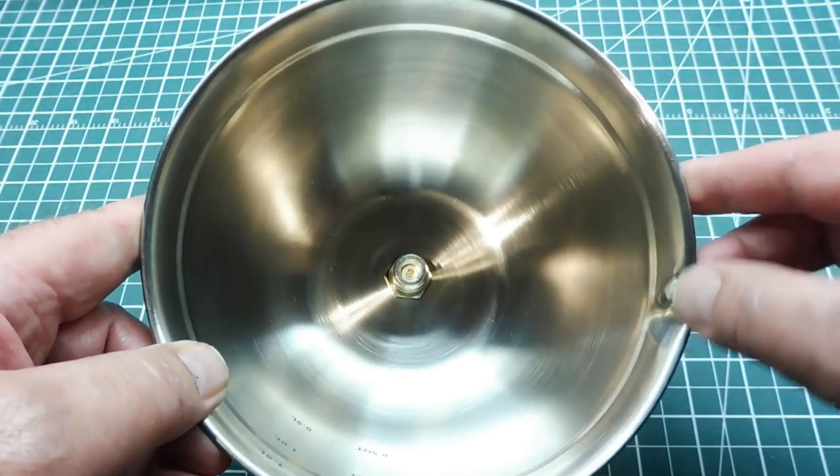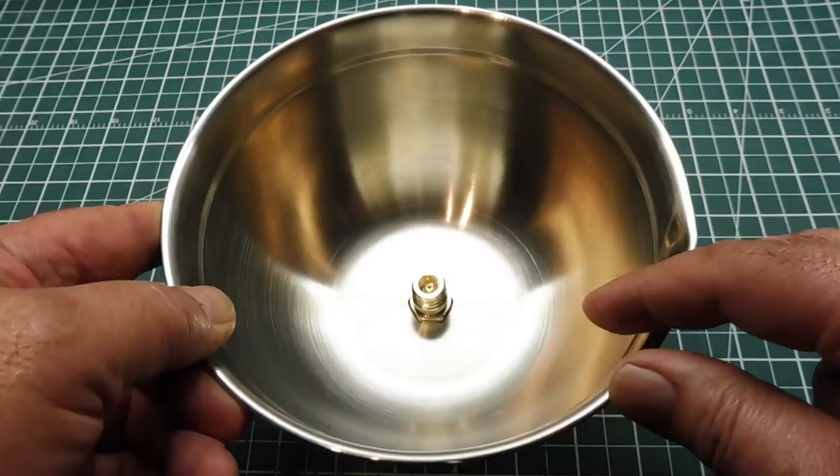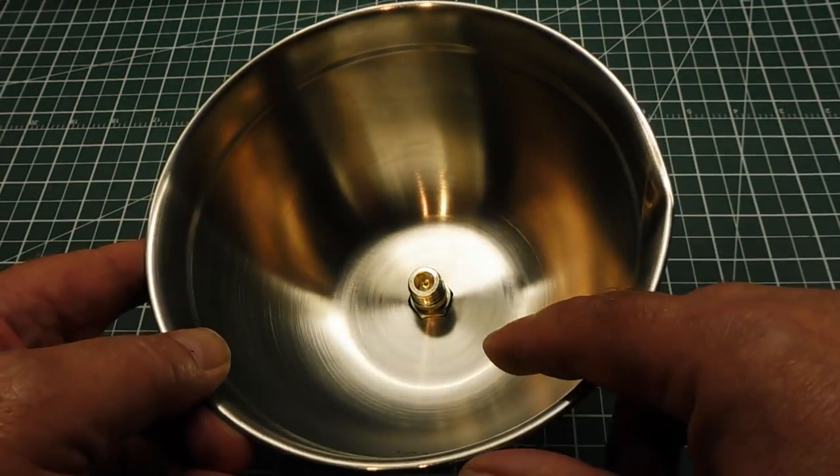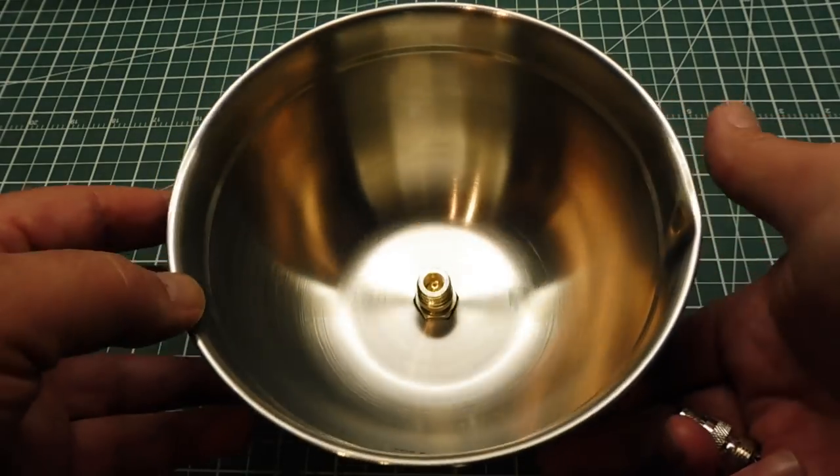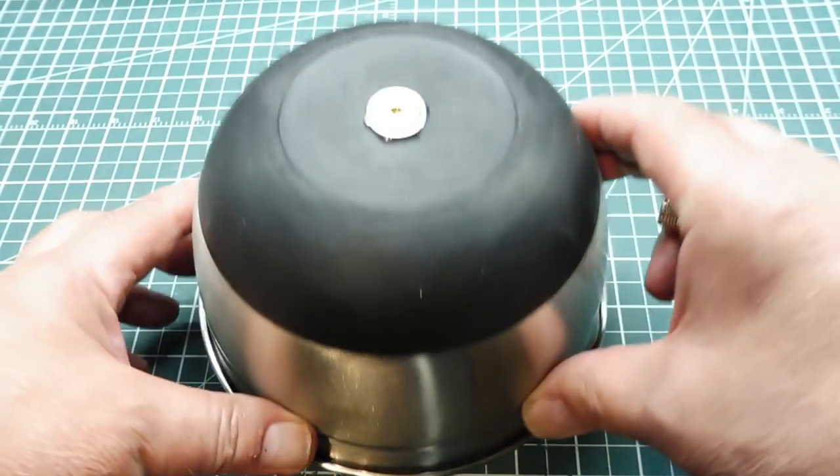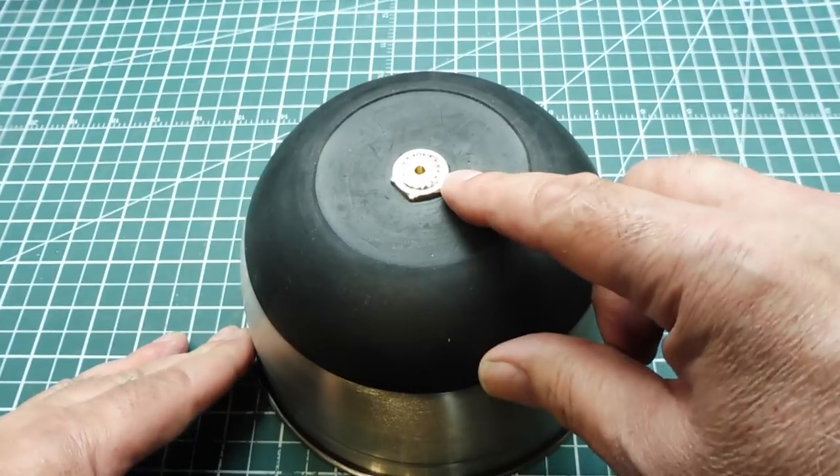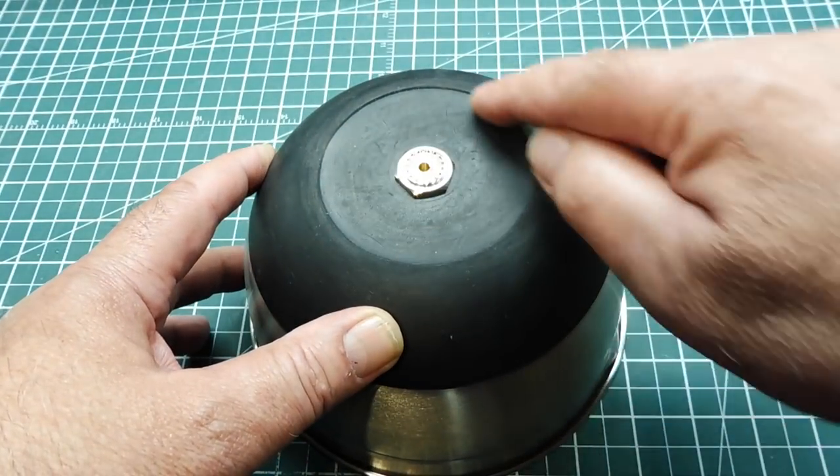Now this is a mixing bowl, it's a metal mixing bowl I got from the dollar store. And I drilled a hole in the bottom, and I installed a UHF female to end female adapter. And you can see on the bottom, there's my UHF female.